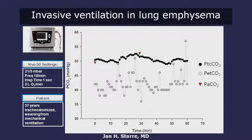I would like to show you a patient on invasive ventilation via tracheostomy, monitored by different techniques over a period of 60 minutes. The filled circles show transcutaneous CO2, the open circles represent end-tidal monitoring of carbon dioxide, and the triangles represent arterial blood gas analysis. As you can see, the patient is stably ventilated and the trends of both non-invasive continuous techniques follow each other quite nicely. In this patient suffering from lung emphysema, transcutaneous CO2 values reflect arterial pressure of carbon dioxide more accurately than end-tidal CO2, though the trend over time is similar.